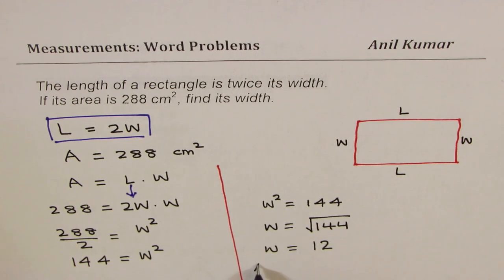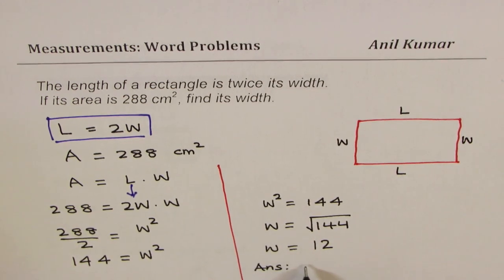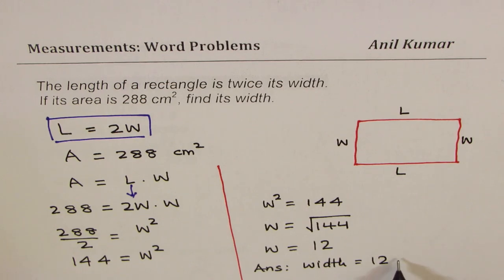that is your answer. So we can write our answer as width equals to 12. Don't forget to write units, centimeter. Is that correct? So that is how you should be doing it.